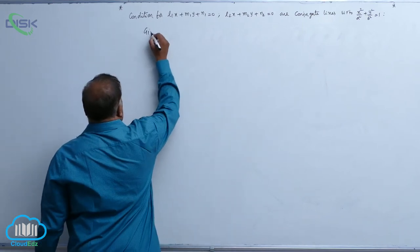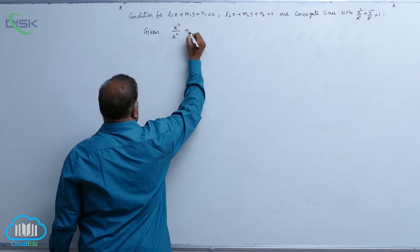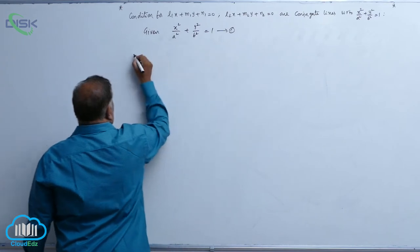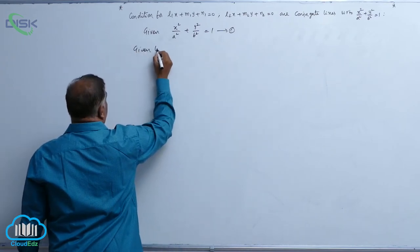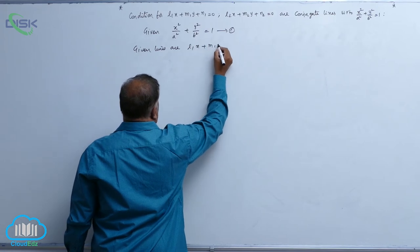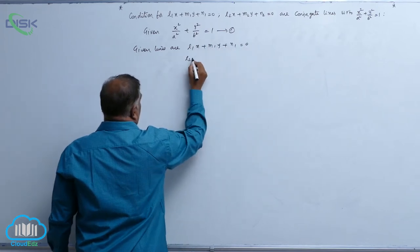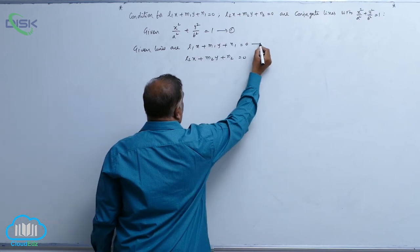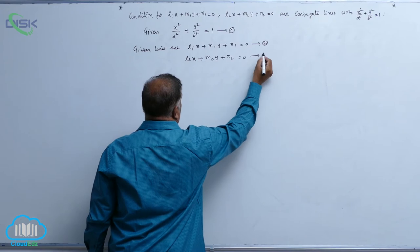First, given ellipse is x square by a square, y square by b square equal to 1. Given lines are l1x plus m1y plus n1 equal to 0, l2x plus m2y plus n2 is equal to 0, call it equation 2, call it equation 3.